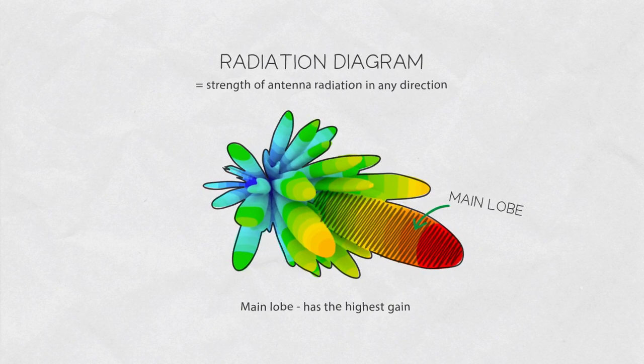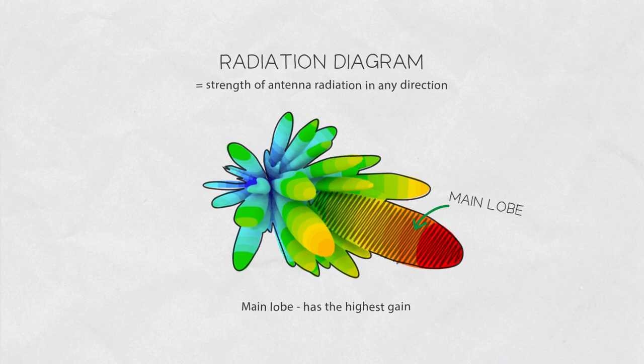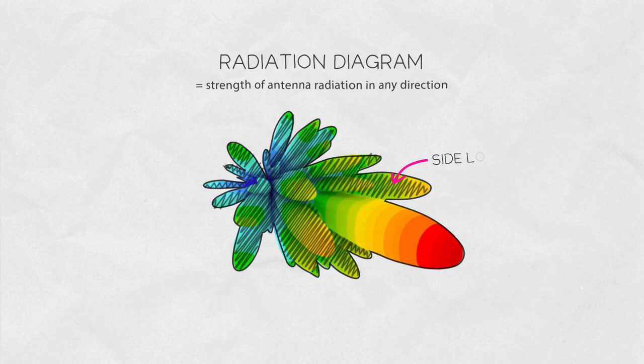The main lobe has the highest gain, and most antennas only have one main lobe. All the lobes other than the main lobe are considered side lobes.